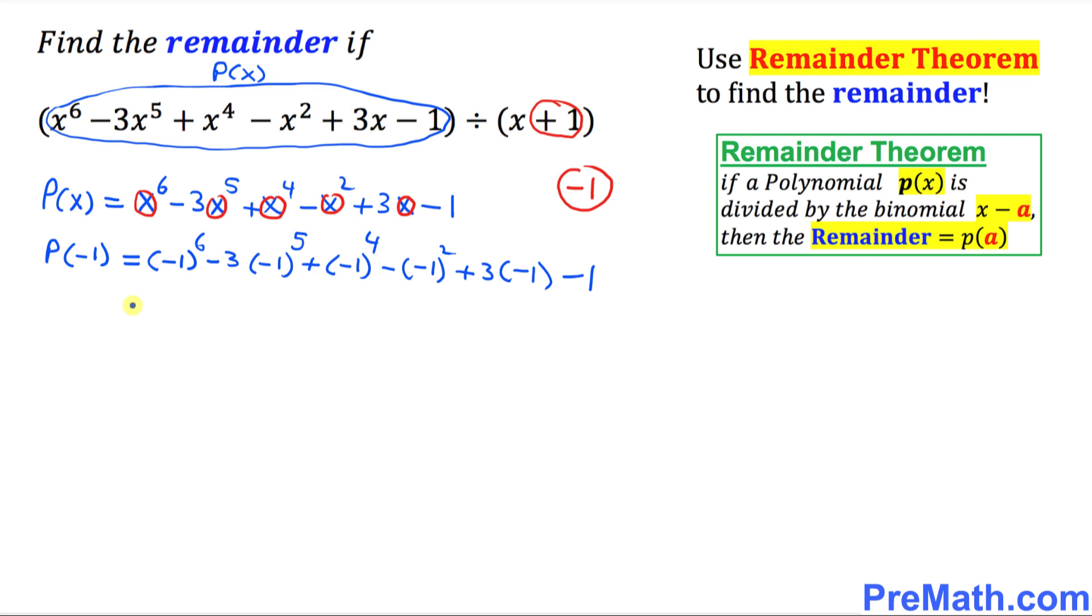Our next step is just simplify. So negative one, if you have an even power, this becomes positive one minus three times when negative one has an odd power, that's going to give you negative one. And over here even power means this is going to be positive one, and this is going to be minus, and then this is going to be positive one as well, minus three minus one.